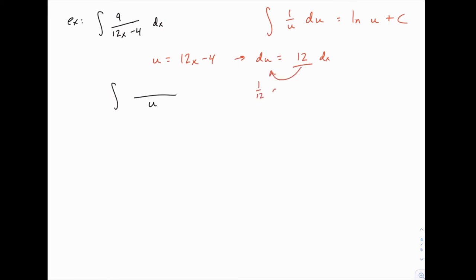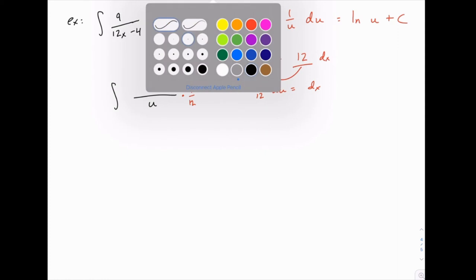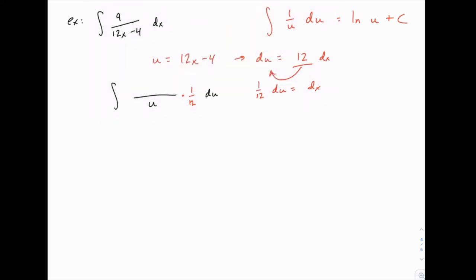What we do have is a 9 and a dx. And the 9 doesn't really help us, so we'll ignore it for a second and think about how can we just swap out the dx. As we've done before, we're going to do that by dividing by 12 here. So we'll have 1/12 du equals dx.